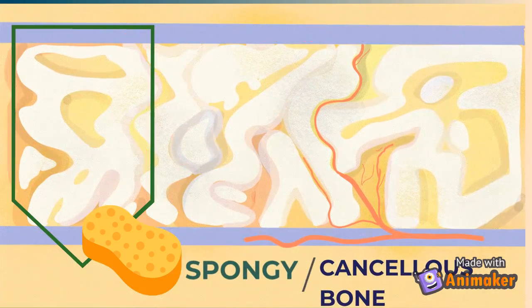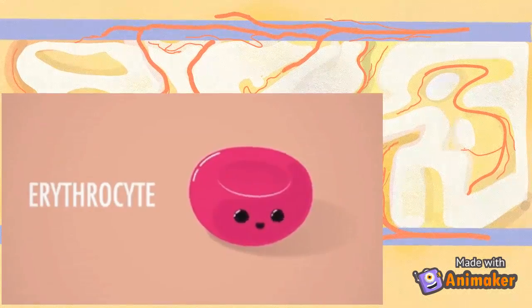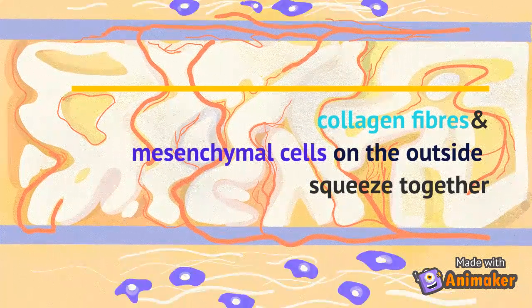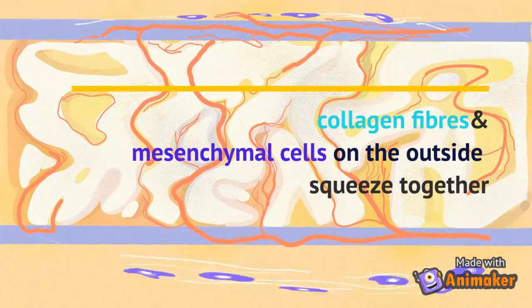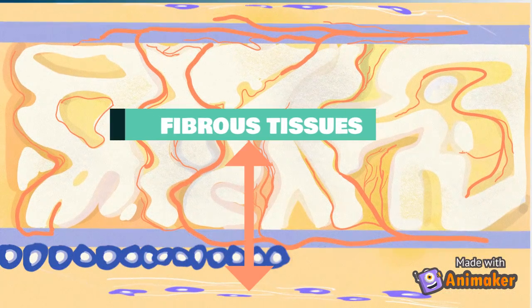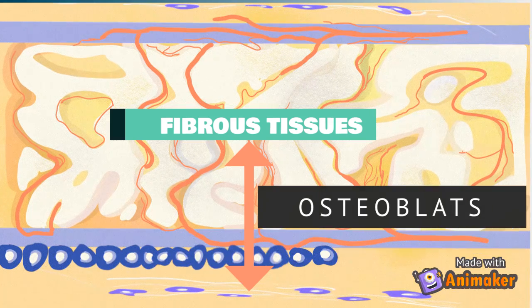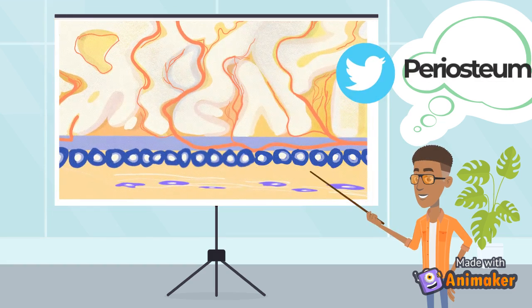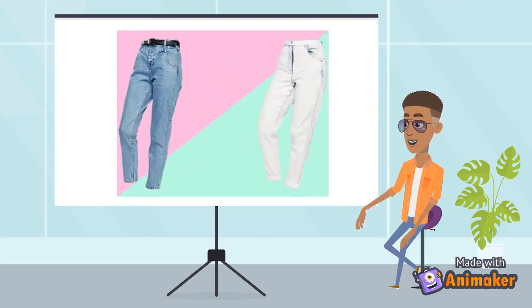The vascularized bone in the center is known as trabeculae, also called spongy bone or cancellous bone. This is where red blood cells are found within the red bone marrow. Finally, the collagen fibers and mesenchymal cells on the outside begin to squeeze together and condense into periosteum, which is composed of fibrous tissue that can produce more osteoblasts. Periosteum is the lining on the outside of the bone that wraps around the bone.